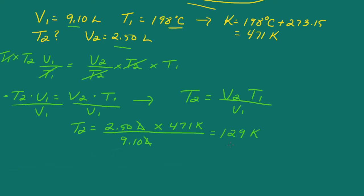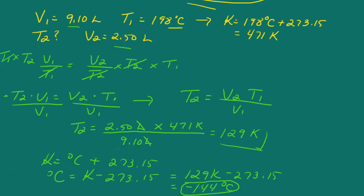So you can go ahead and check your answer by just plugging back in. Now the problem asked for degrees Celsius, so we need to convert the Kelvin to Celsius. And so Kelvin temperature is degrees Celsius plus 273.15, right? So degrees Celsius then will be Kelvin minus 273.15. And that's going to be 129 Kelvin minus 273.15, so that gives us negative 144 degrees Celsius.